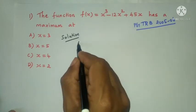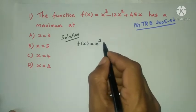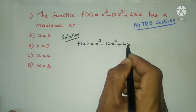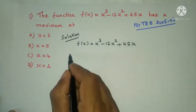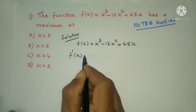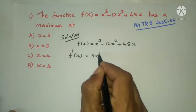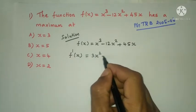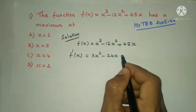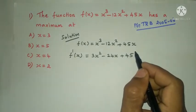First, f of x is equal to x³ minus 12x² plus 45x. We differentiate once: f'(x) is equal to 3x² minus 24x plus 45.